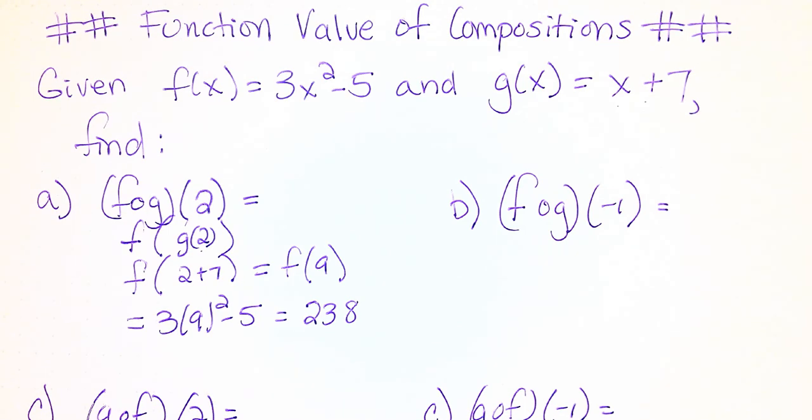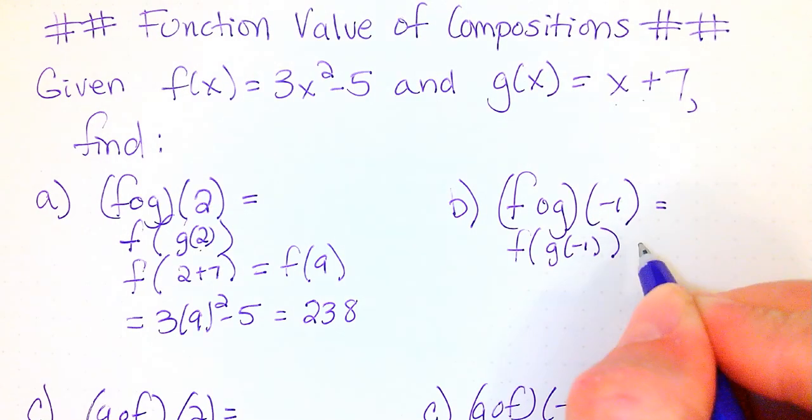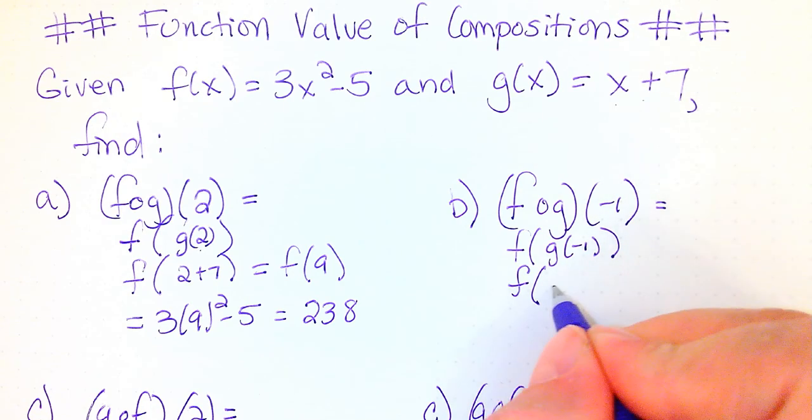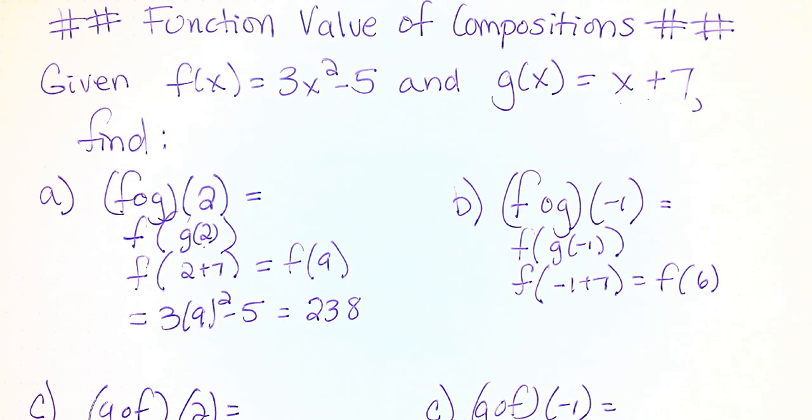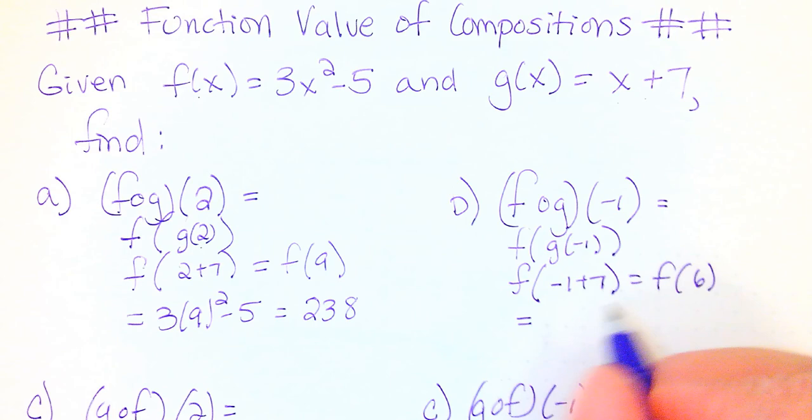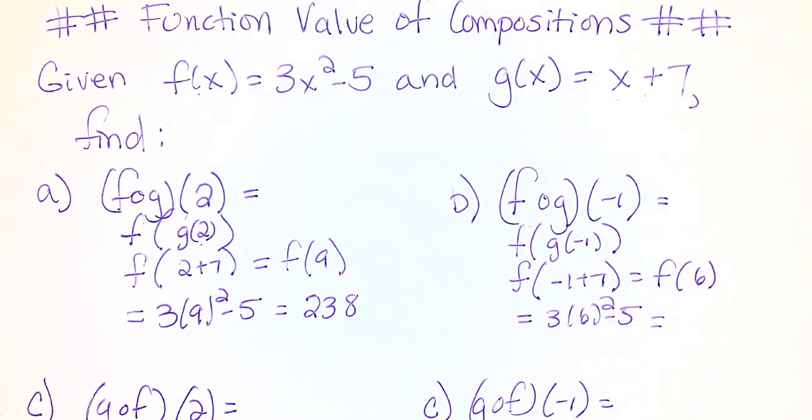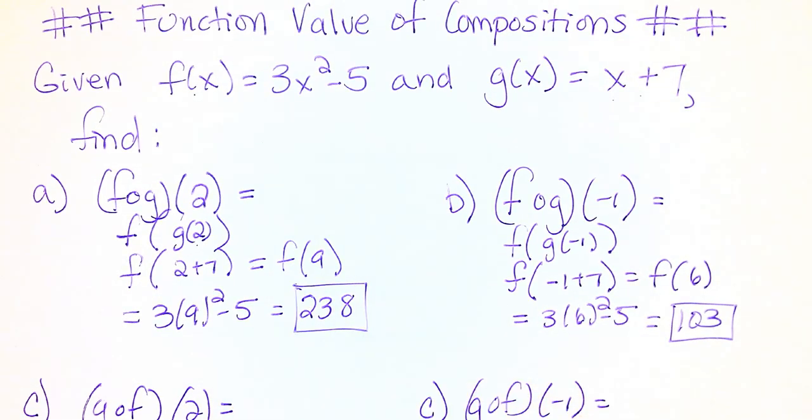Let's look at the b part, f of g of negative 1. I want to go through the same process. f of g of negative 1. This is going to give me f of, now I'm taking negative 1 and putting it in here. So negative 1 plus 7 is f of 6. This is going to give me now 6 into f. So this is 3 times 6 squared minus 5. And this gives me 103. So that would be your answer there.